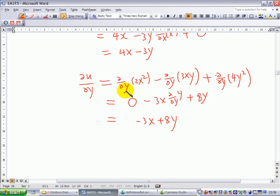Notice that as you differentiate with respect to y, you keep x constant. Therefore, 2x squared will be constant and differentiate constant, you get 0.